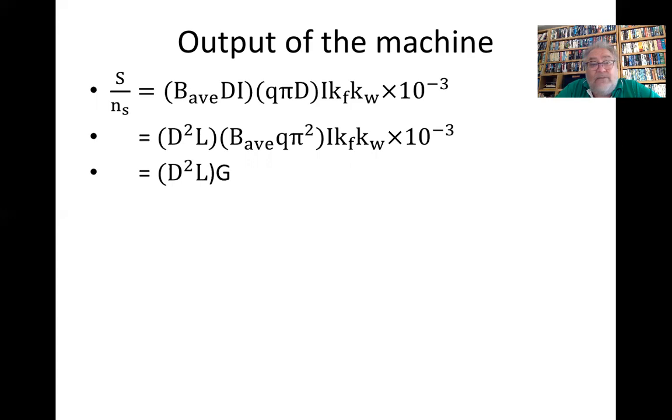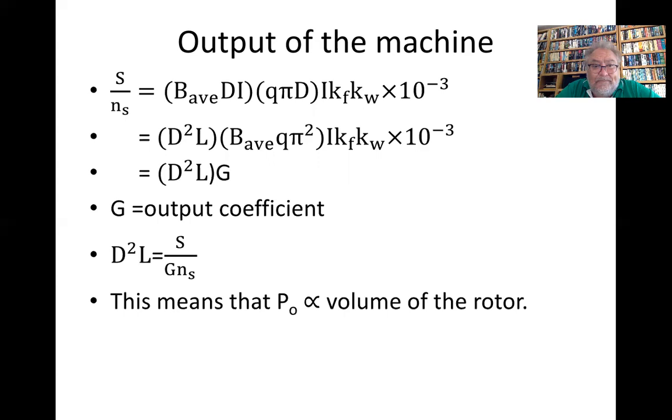Which is equal to D² L times G, where G is the output coefficient. And D² over L is S over G n_s.